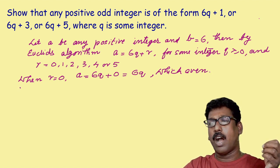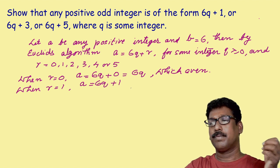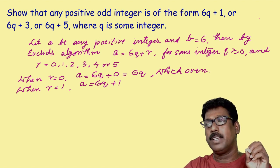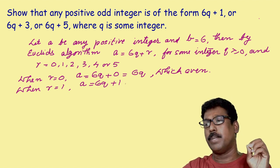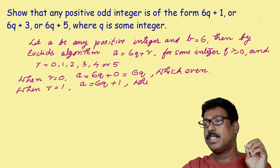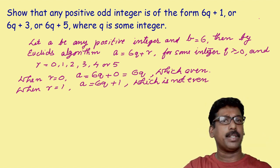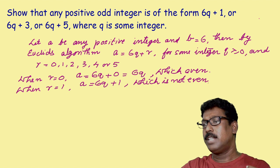Now, what about when r is equal to 1? Then a can be written as 6q plus 1. Is it even? Because 6q is divisible by 2, but 6q plus 1 is not divisible by 2. So we can write: which is not even. Any positive number will be either even or odd, and since this number is not even, therefore it is odd.